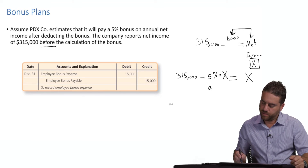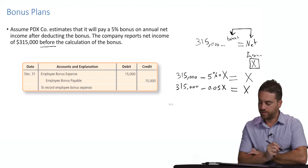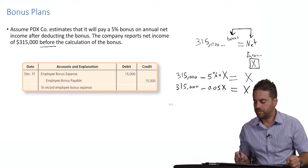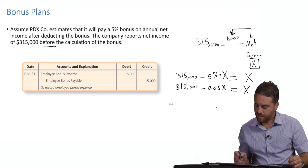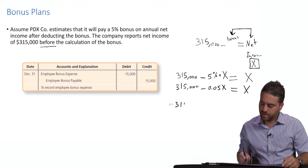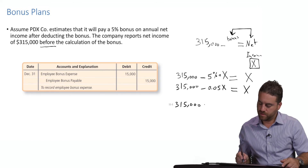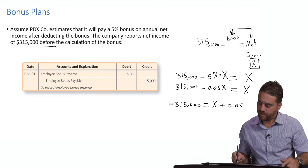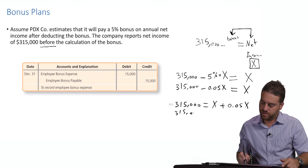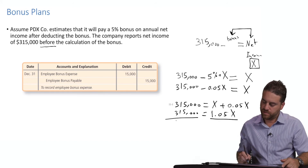In other words, $315,000 minus 0.05X equals X. That's the best way to find out what your bonus is: $315,000 minus 5% of X equals X. Then you just need to solve for X, and multiply 5% by X to calculate your bonus. To solve for X — it's algebra — move the X's to one side: $315,000 equals X plus 0.05X, so $315,000 equals 1.05X. Then divide both sides by 1.05.